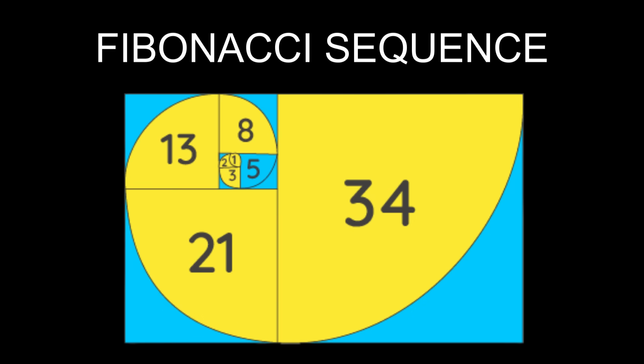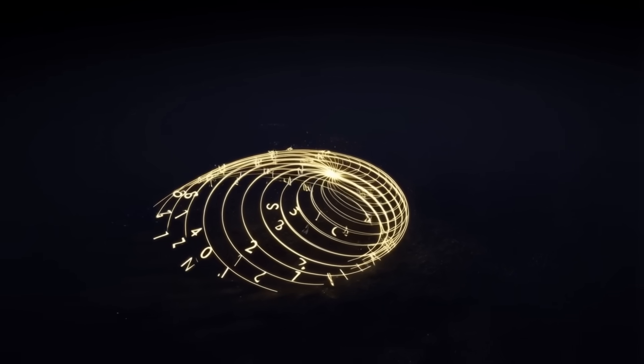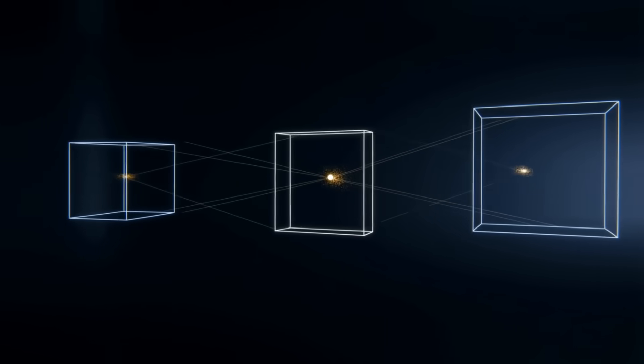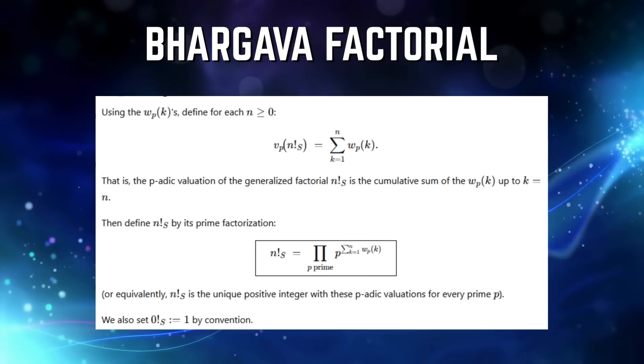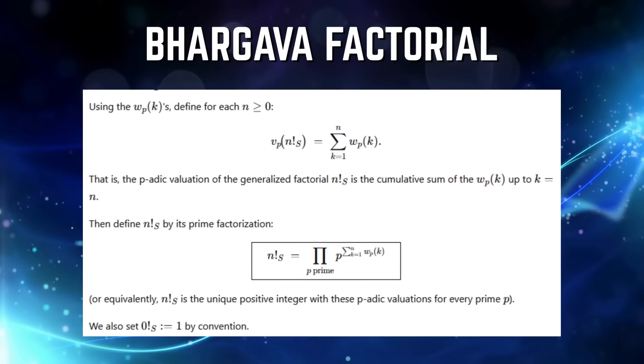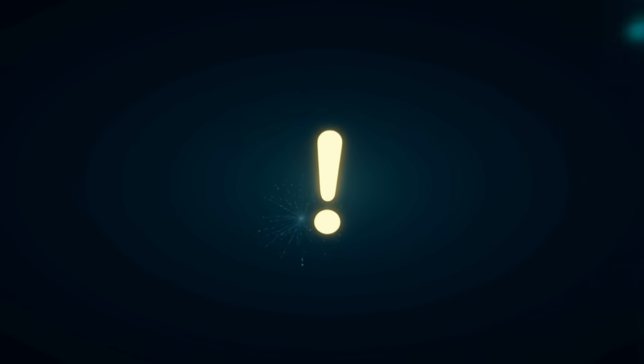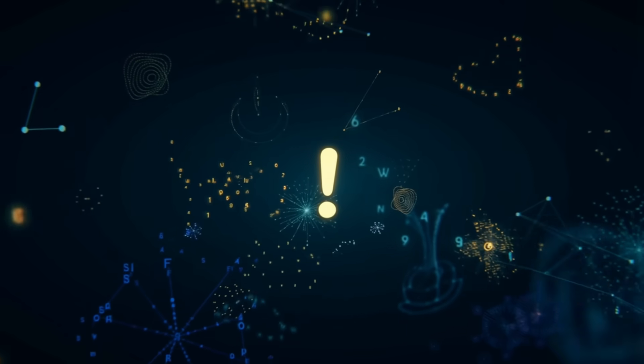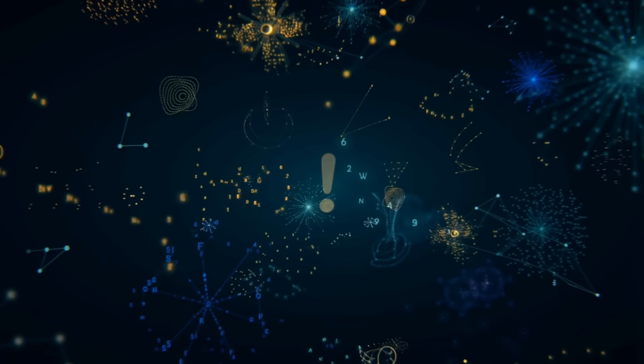Most people think the factorial is fixed, a tidy sequence beginning with 1, 2, 6, 24. But Bhargava asked a radical question. What if factorials could be defined over any number system? Over any subset of integers? Over any algebraic structure? His answer became the Bhargava factorial, a sweeping generalization that linked back to a decades-old conjecture of George Polya. It expanded the toolbox of algebra in a way that mathematicians are still unpacking today.